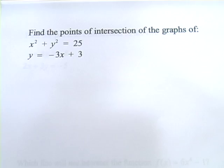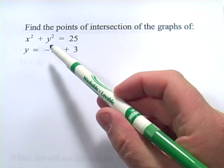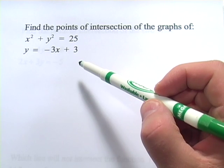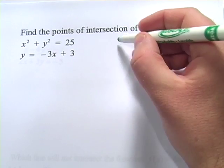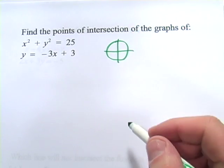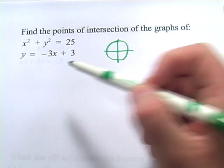All right. Let's look at one more, which is a little bit trickier. This one says, find the points of intersection of the graphs of x squared plus y squared equals 25, and y equals negative 3x plus 3. Maybe you're familiar with the form on this top equation. That's the formula for a circle with radius 5. So it would look something like that.